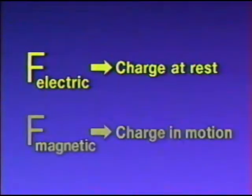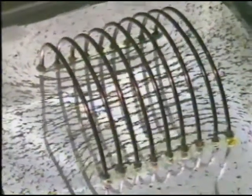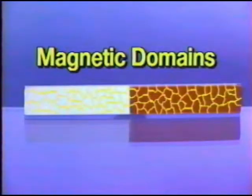Electric forces are exerted by charges at rest; magnetic forces are a second kind of force exerted by charges in motion. Within an electromagnet, the magnetic field is established by moving electrons passing through the coil of wire. In the case of permanent magnets, the moving charges are electrons revolving about the atomic nuclei.